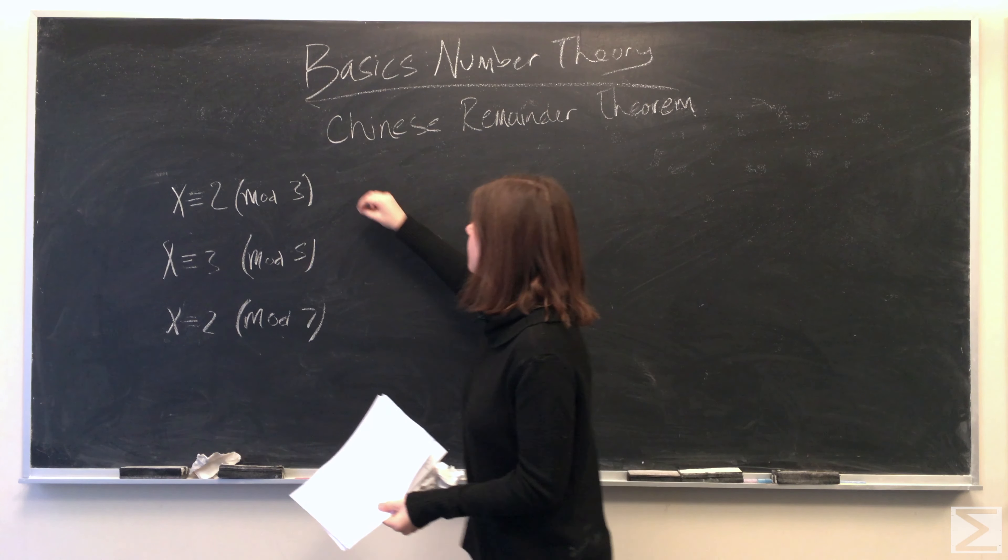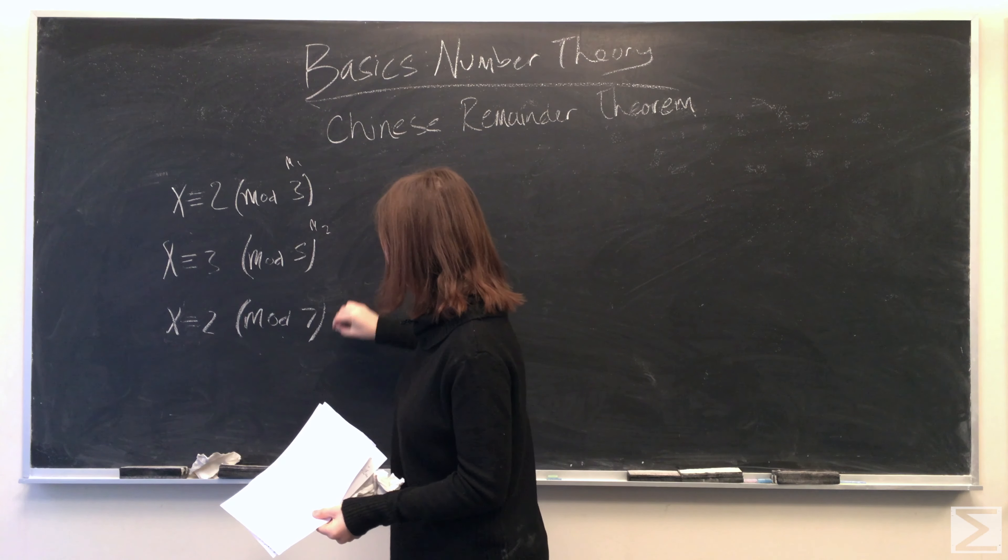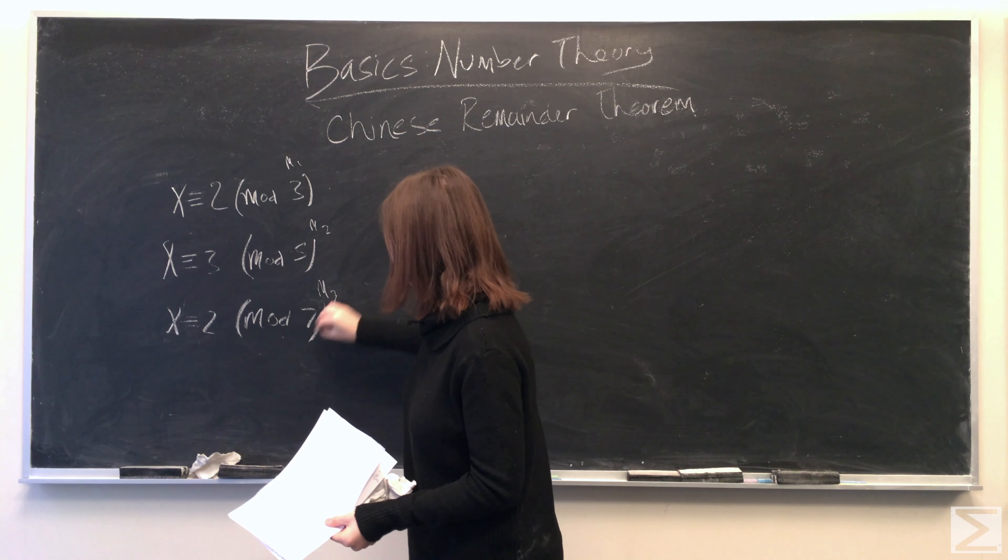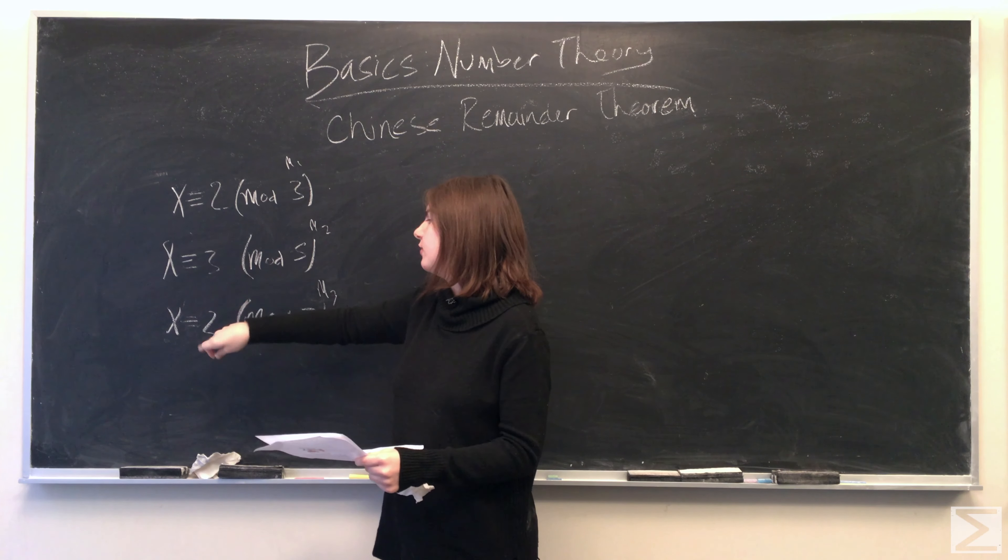In this case, we have 3 is little m1, 5 is little m2, and 7 is little m3. And then 2, 3, and 2 are a1, a2, and a3.